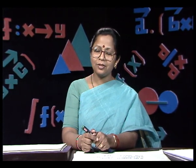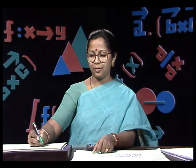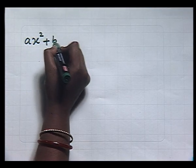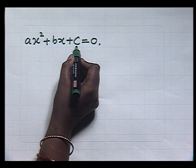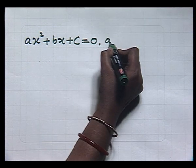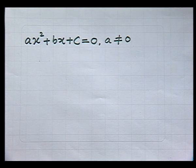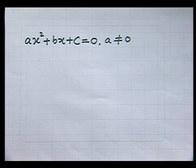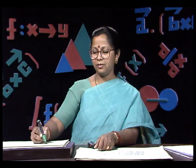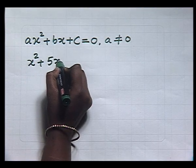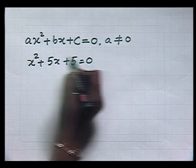Hello viewers, remember what all we learnt in your previous lesson? We learnt that a linear equation is an equation of degree 1 and a quadratic equation is an equation of degree 2. A quadratic equation is of the form Ax squared plus Bx plus C equal to 0, where A, B and C belong to the set of real numbers and A is not equal to 0. We also learnt to find roots of a quadratic equation by the factorization method, but we could not find the roots of the equation x squared plus 5x plus 5 equal to 0 by that method.